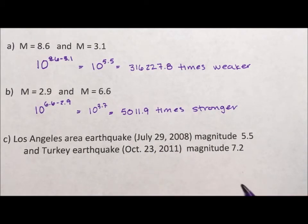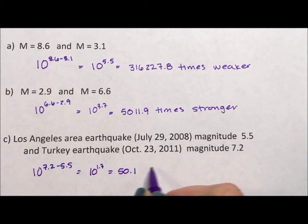And if we wanted to compare them and we want to know how Turkey compares to Los Angeles, we would say 10 to the 7.2 minus 5.5 equals 10 to the 1.7, which equals 50.1 times stronger.